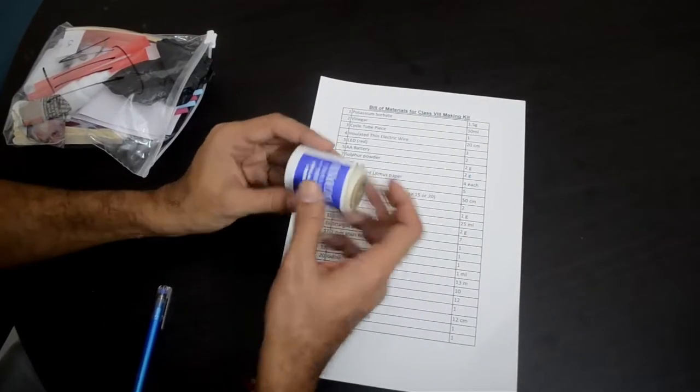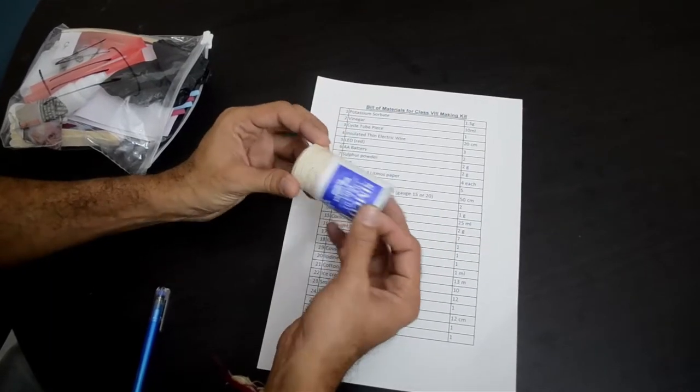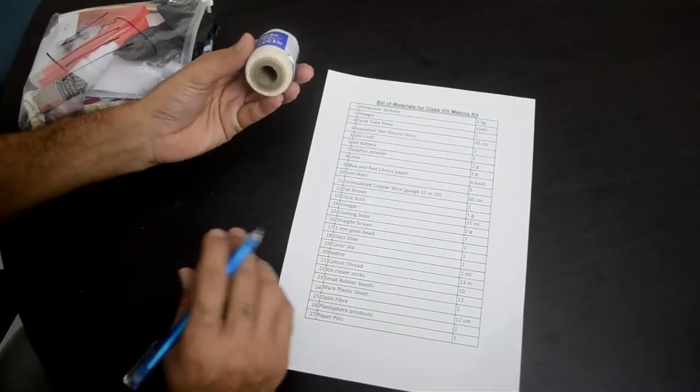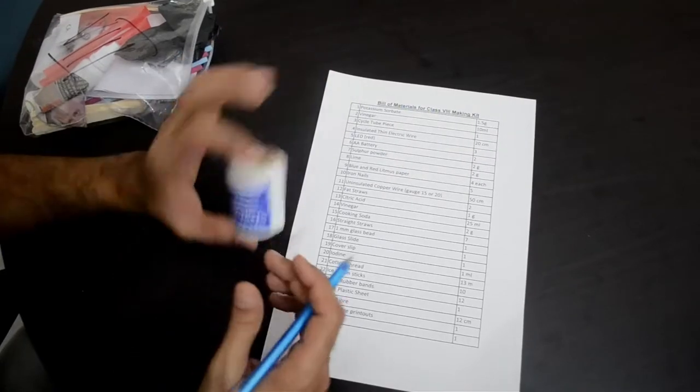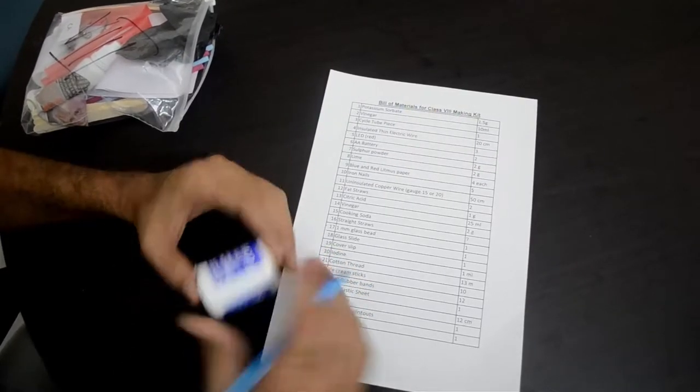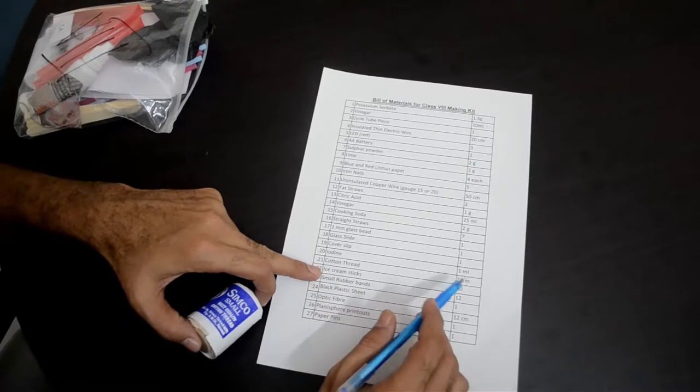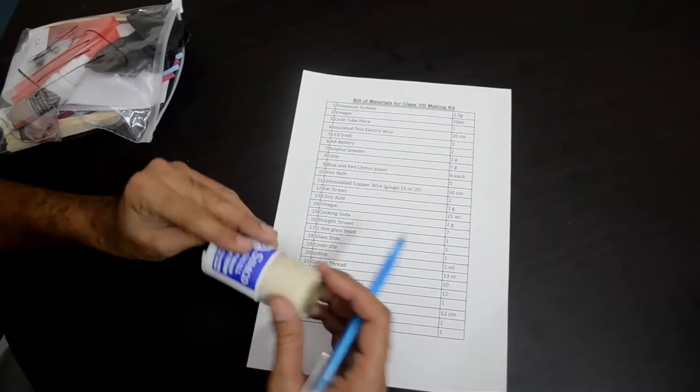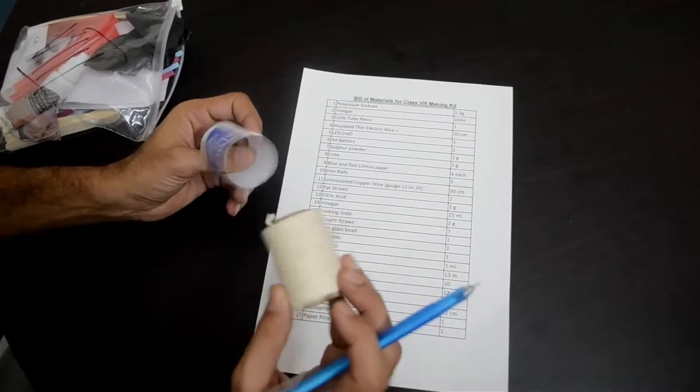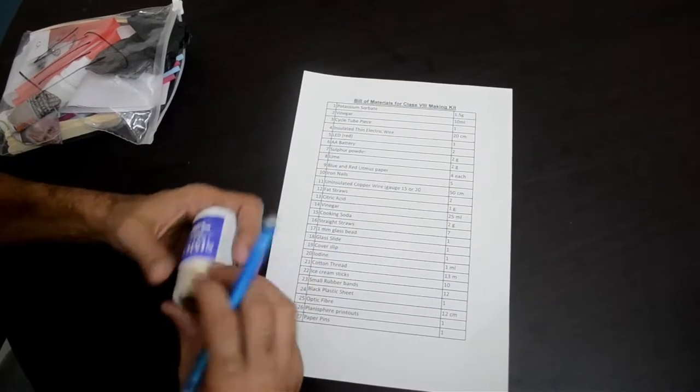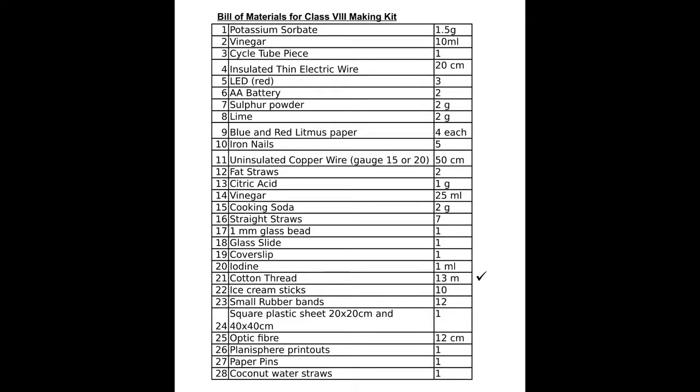That's a cotton thread. There are many activities for which you need the cotton thread, the paper cup phone and the parachute. You will need a total of 13 meters of cotton thread. So you would have received it on a reel like this. That's item number 21 in our list.